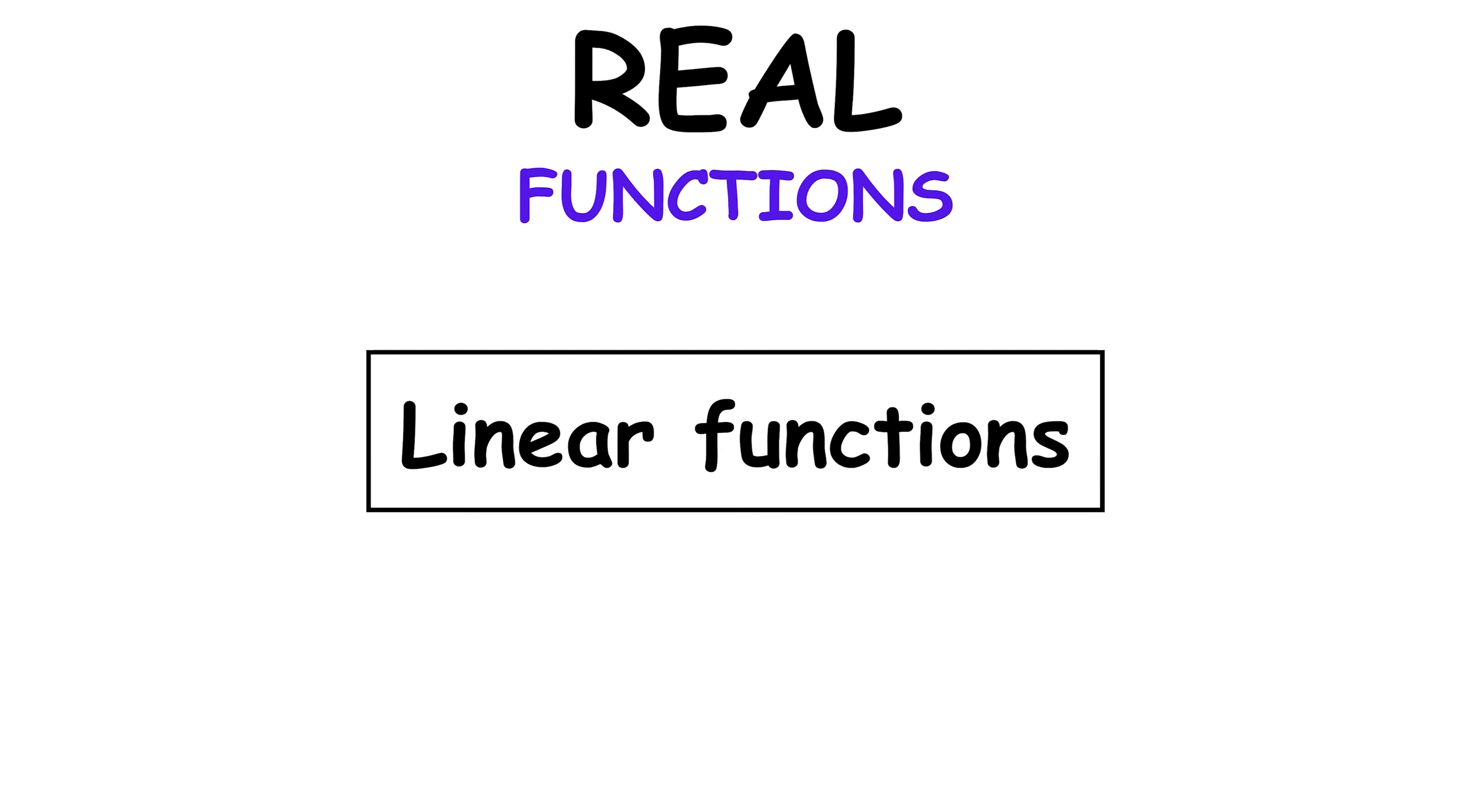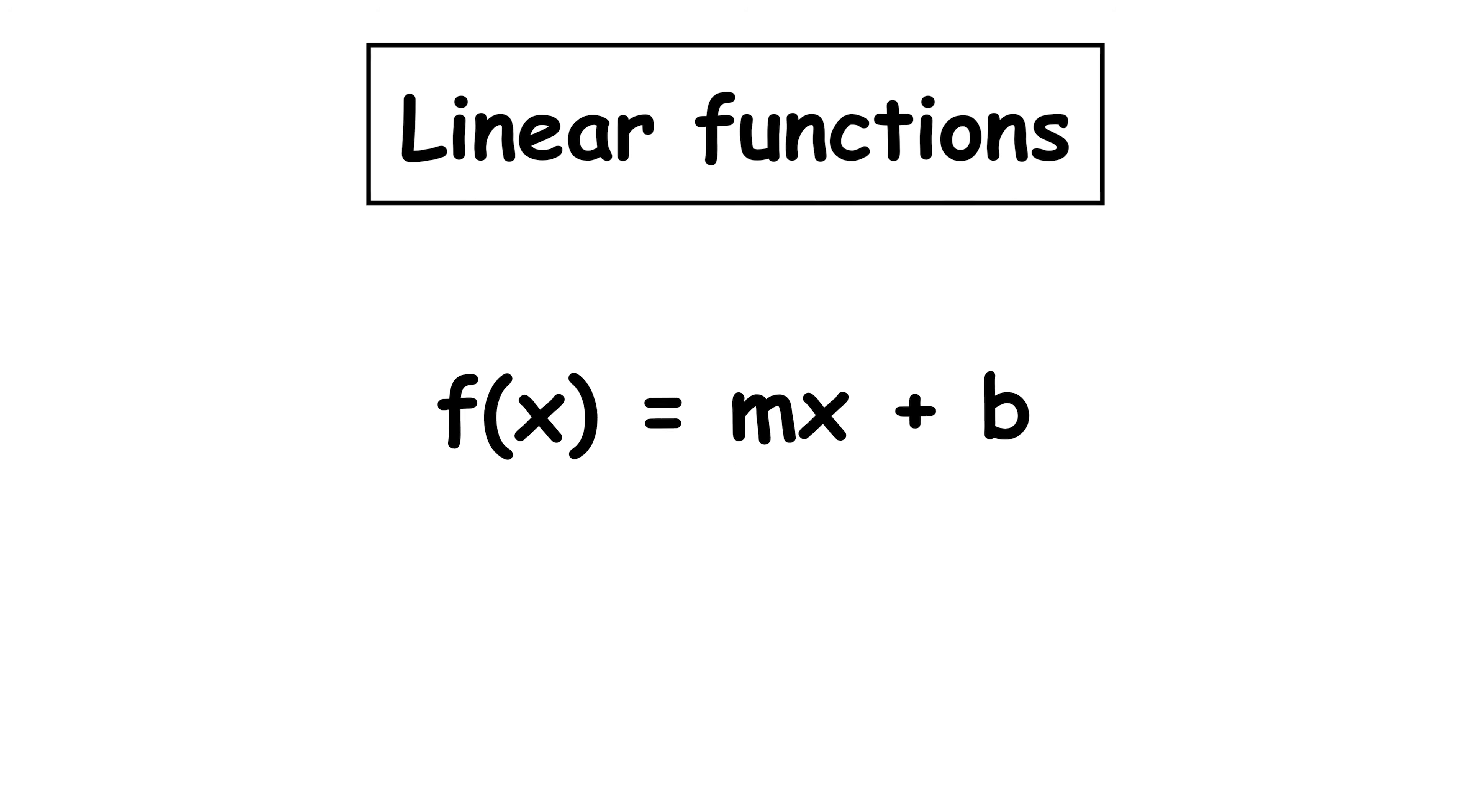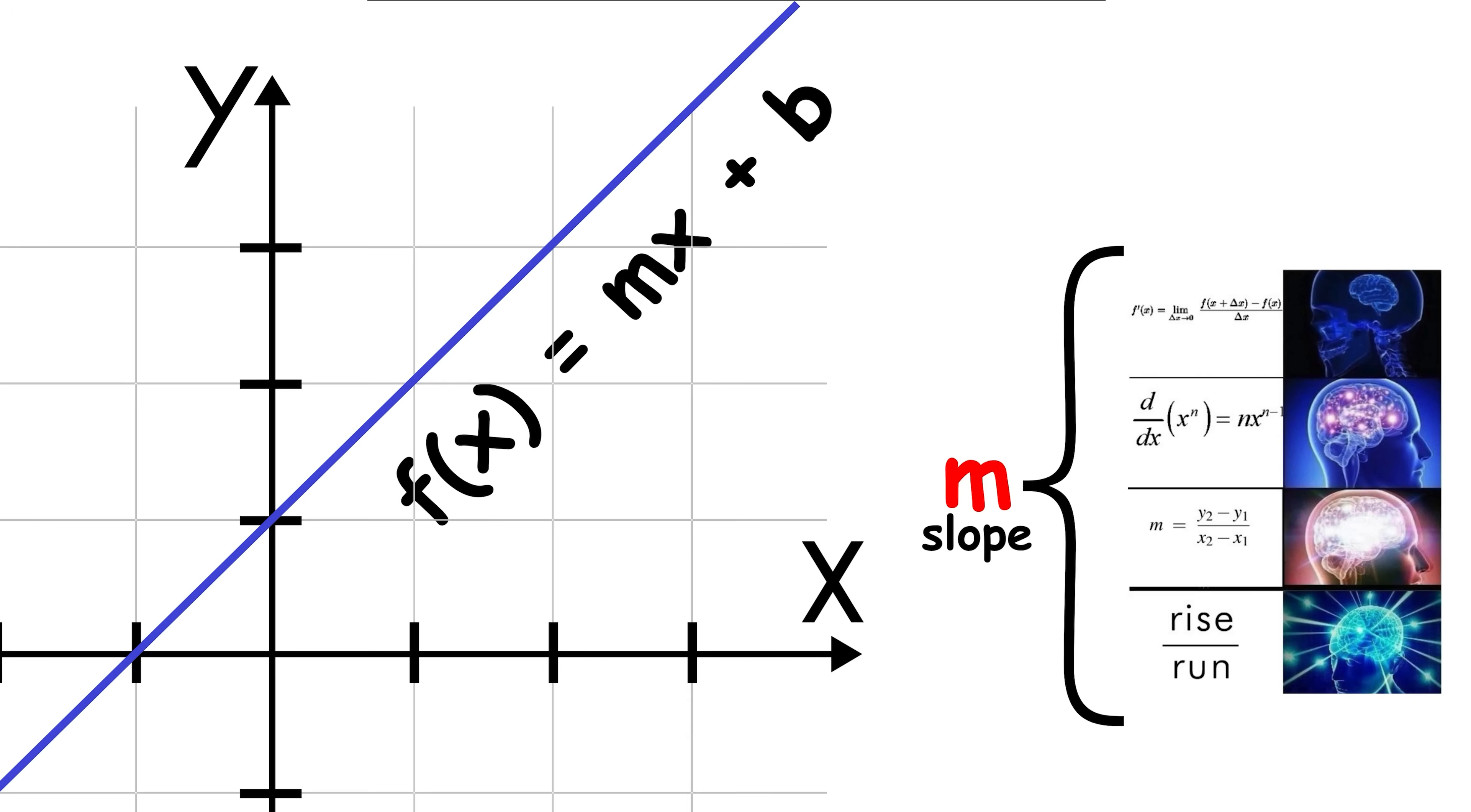Linear functions. Linear functions have the form f of x equals mx plus b. Here, m represents the slope and b the point where the line crosses the y-axis.